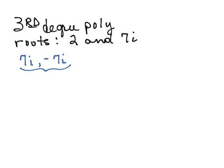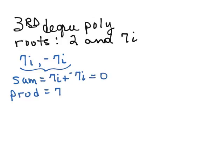So if we consider these two roots, their sum would be 7i plus negative 7i, which is zero. And their product would be 7i times negative 7i, which is negative 49i squared. And because i squared is equal to negative 1, negative 49 times negative 1 is just positive 49.